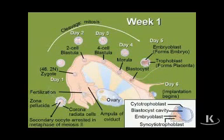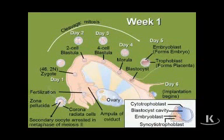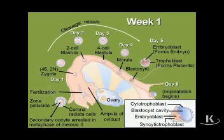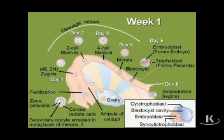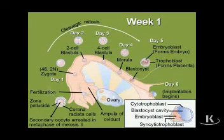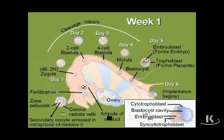Inside, we have a fluid-filled cavity with a group of cells pushed way over to one side. Once we've achieved that structure, we now call this a blastocyst, and we're at about five days of development. Now in this blastocyst, we can define two groups of cells: we have the outer cells lining the surface of the blastocyst, which can be called the outer cell mass.